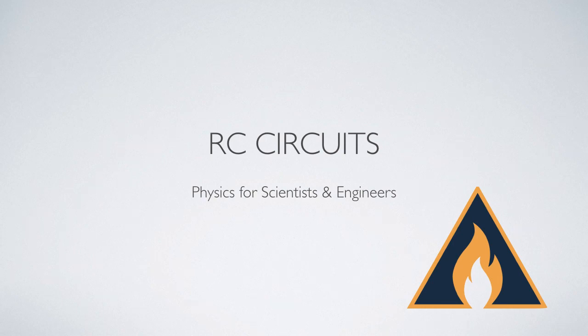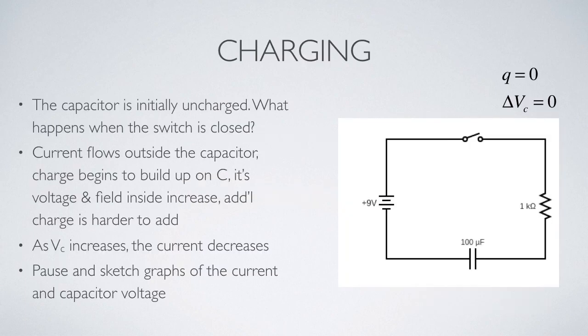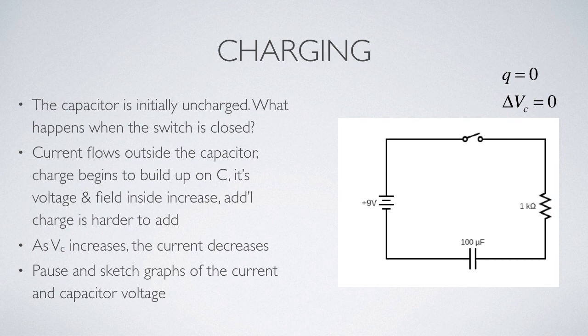This presentation covers the time behavior of resistor-capacitor circuits. We'll start by imagining a single-loop circuit that contains both a resistor and a capacitor along with an EMF source. We've looked at circuits with just resistors and just capacitors, and we know that capacitors don't charge instantaneously — the charge and potential difference across them build up over time. We want to investigate that time behavior.